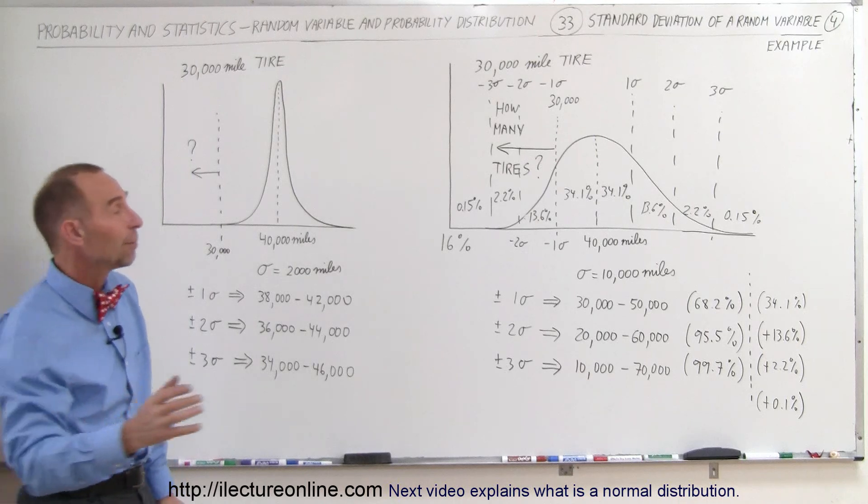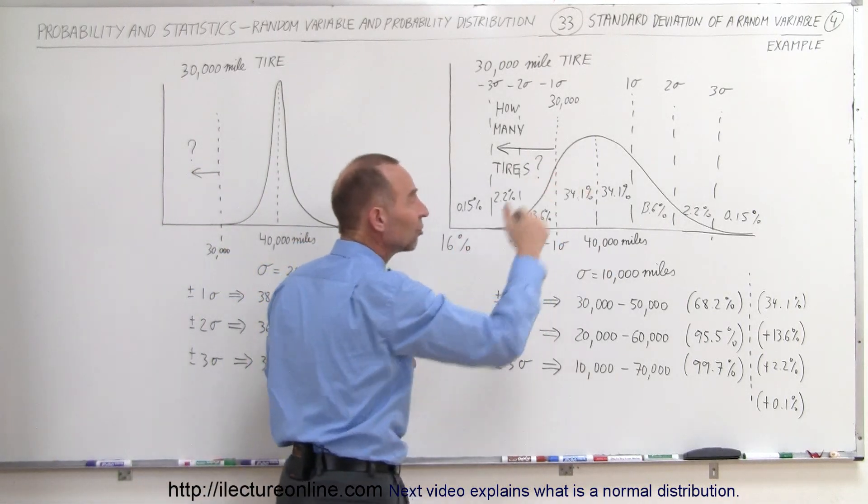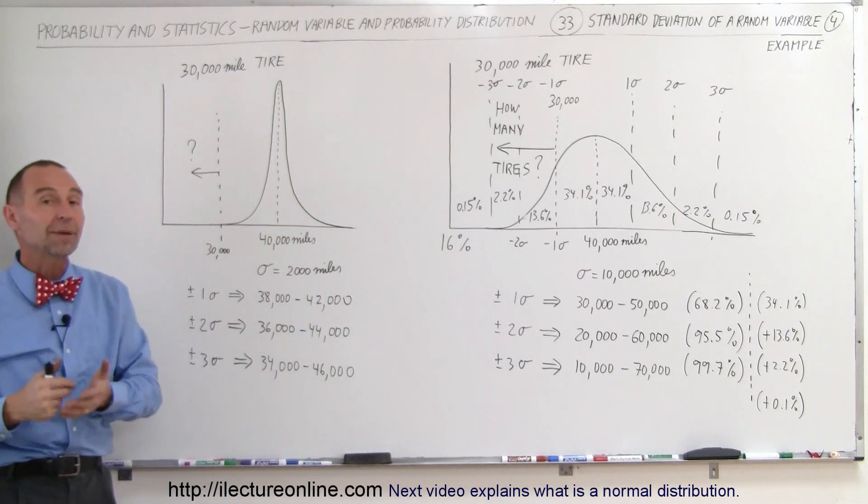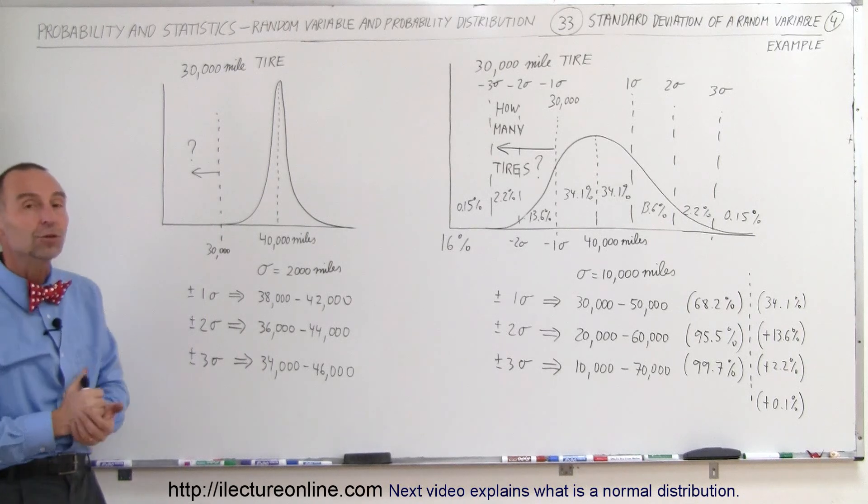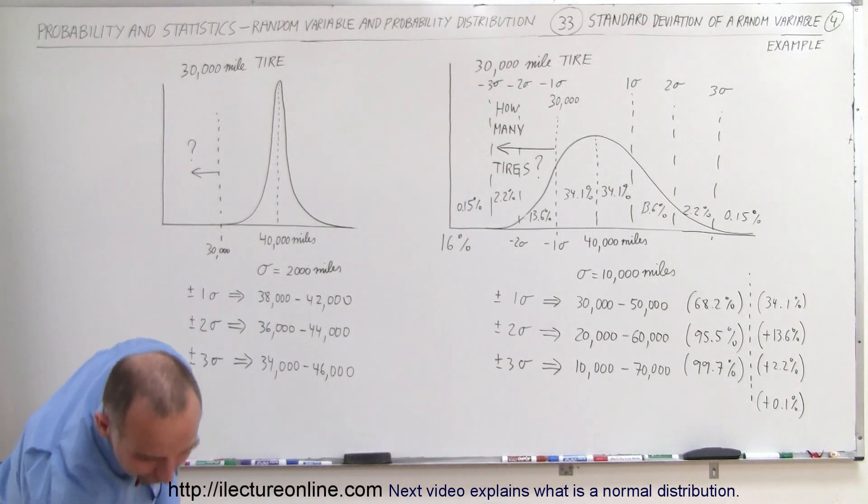And all we have to do is sample a relatively small number out of the total population to get that nice, normal distribution. And that's what we mean by standard deviation and how we use it.